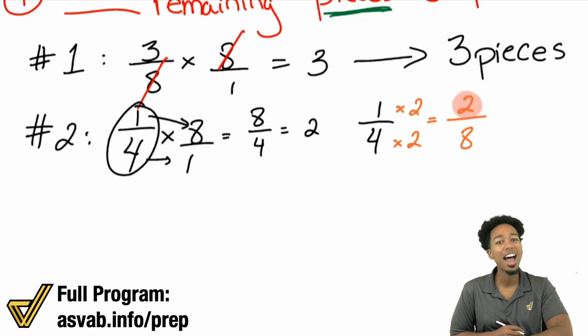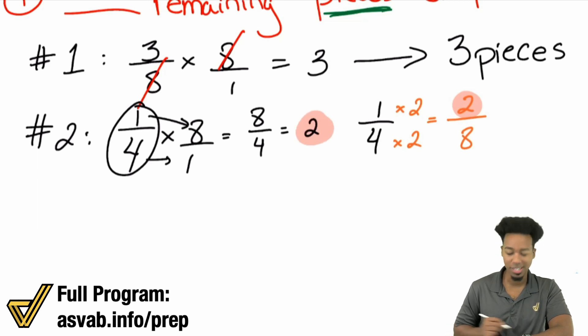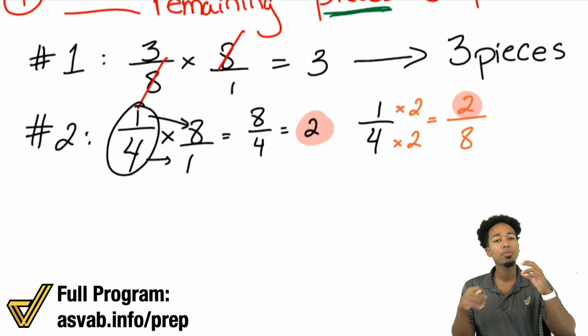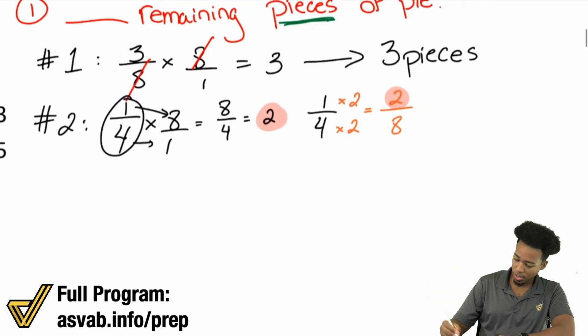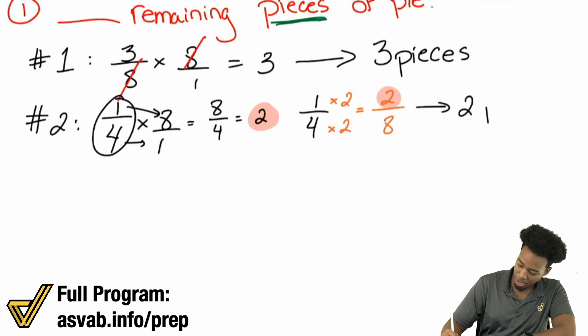Again, 2 pieces out of the 8. 2 pieces. So either way it'll work. I'm just trying to show you both ways. That way you can pick the way that you like the best if you see a similar problem. But there it is. We have 2 pieces for pie number 2.